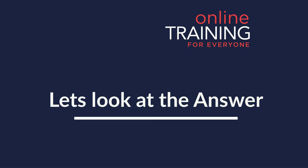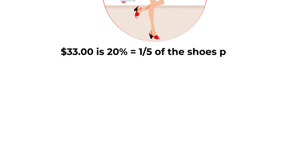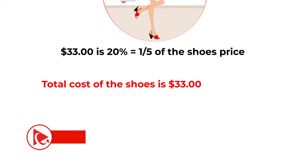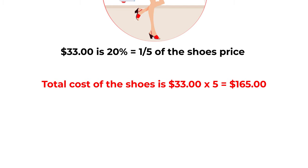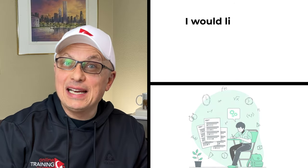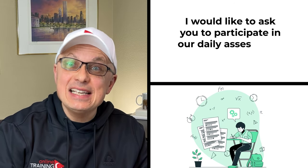The answer is very simple: $33 is 20 percent, or one-fifth, of the shoes' price. So the total cost of the shoes is 33 multiplied by 5, which equals $165. The correct answer is choice D, $165.